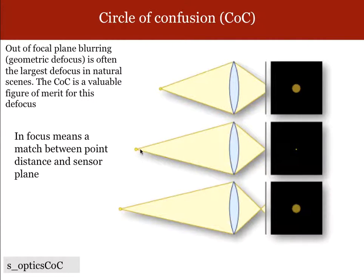When you have points that are at different distances, so this plane is in the right position for this depth, but it's not in the right position for nearer and further depths, you'll get a blurrier spot. That's a geometric defocus.